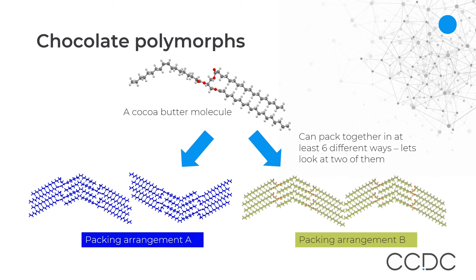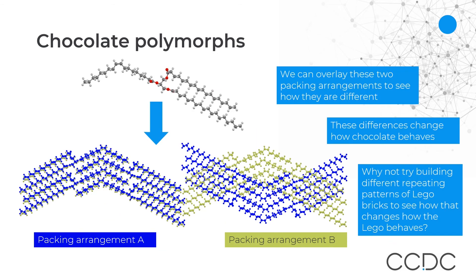Heating the chocolate caused the molecules inside the chocolate bar to move around, changing it from a solid to a liquid when the chocolate melted. When we cooled the chocolate down again, the molecules stopped moving around and the chocolate re-solidified. How the cocoa molecules are packed together when it re-solidifies can cause some physical observations that can signify a new polymorph has formed, such as a change in colour and appearance.